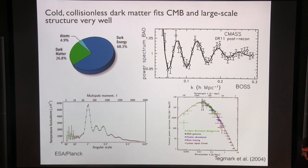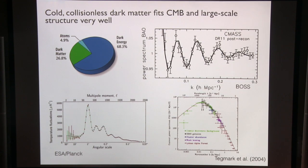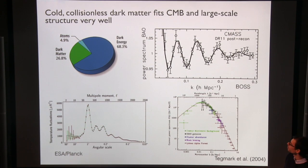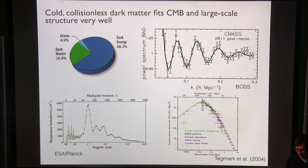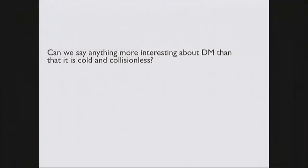To summarize: if we assume dark matter is cold and doesn't have any significant interaction with itself or with ordinary matter, we can predict the CMB that we see from Planck in great detail. We can also run forward what we should see today in the universe — the large-scale power spectrum at low redshift or baryon acoustic oscillations. This very simple cold dark matter model explains all of these observations on large scales very beautifully. But can we say anything more interesting than just that it's cold and collisionless?